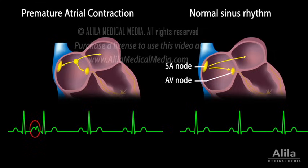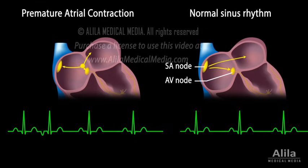In situations where the ectopic site is located near the AV node, the atria are depolarized mainly by retrograde conduction, and the resulting P wave is inverted. The PR interval, representing the time the signal reaches the AV node, is slightly shorter.